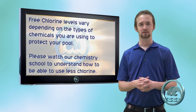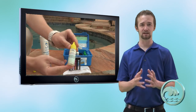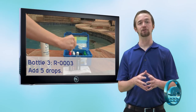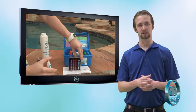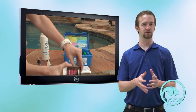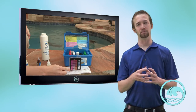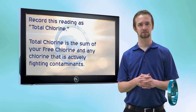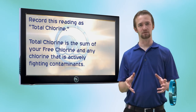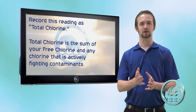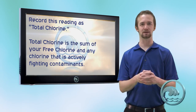The next reading we need is for total chlorine. Take the last yellow bottle, R0003, and do five more drops into the same sample. Again, shake the compartment using the cap or your thumb and compare it against a white background or sunlight. This reading is called total chlorine — it tells you the entire amount of chlorine in your pool, both the free available chlorine and any chlorine that may be actively tied up with a contaminant and oxidizing or sanitizing it.